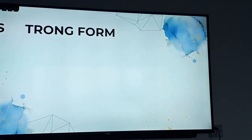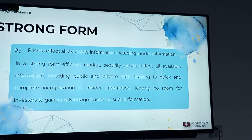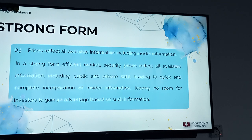Moving on to our strong form of efficient capital market, where security prices reflect all available information, including both public and private information. This means that even insider information — which is non-public information about the company, known only to its insiders such as management or employees — is quickly and fully incorporated into the stock price. No investor can gain an advantage over others based on insider information, as it is already reflected in the stock price. This level of efficiency is considered the most robust, as it ensures that all relevant information, regardless of its source, is instantly factored into security prices.